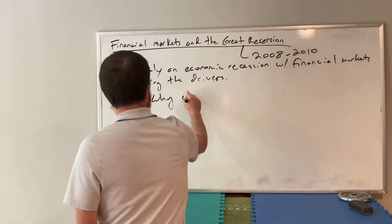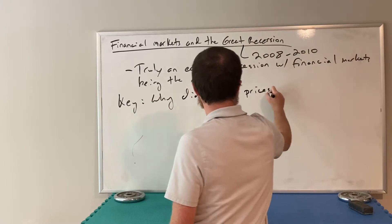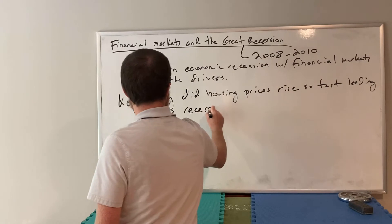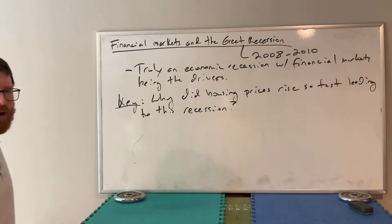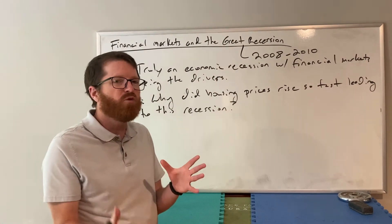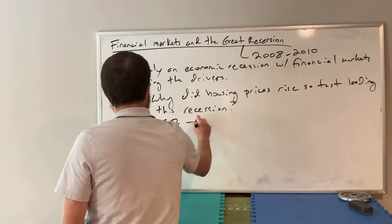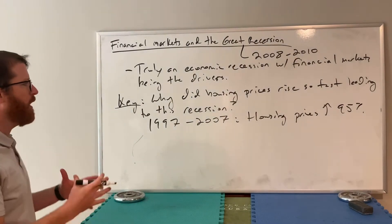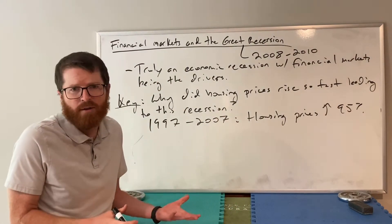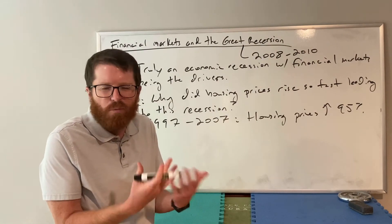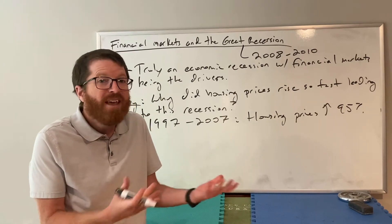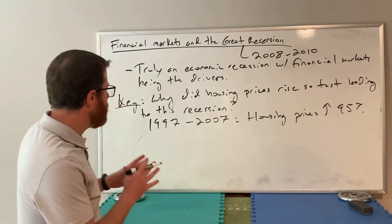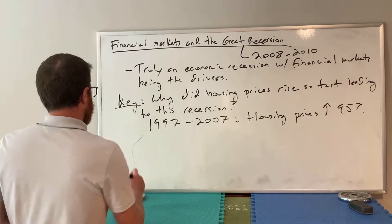The key question to understand is: why did housing prices rise so fast leading up to this recession? If you know anything about this recession, you know it was driven by the housing market. Between 1997 and 2007, housing prices went up about 95%, far exceeding inflation. Housing prices typically go up 3-4% per year on average - seeing 95% growth over 10 years is really insane. To understand this, the first thing we need to talk about is our relationship to China.